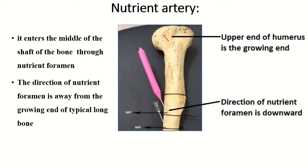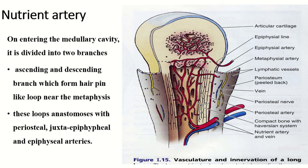The direction of the nutrient foramen is always away from the growing end. For example, in the humerus, the upper end is the growing end, so the direction of the nutrient foramen is downward. When the nutrient artery enters within the medullary cavity, it divides into two branches: the ascending branch and the descending branch.